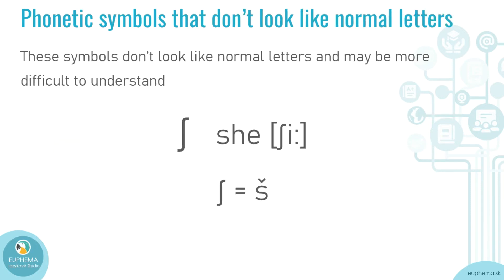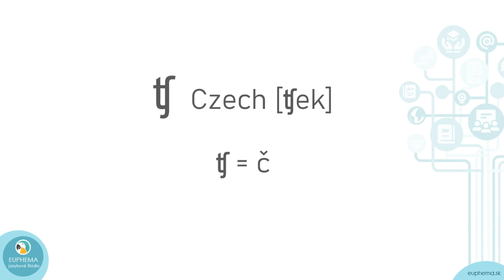Let's start with symbols that don't look like normal letters and may be more difficult to understand. The first letter looks a little bit like a hook and it's a Slovak 'š'. For example, this is transcribed phonetically as 'she'. When you combine 't' and 'sh' together, this symbol represents 'chip', and you can see it for example in the word 'check'.